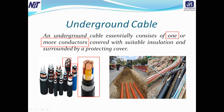An underground cable essentially consists of one or more conductors covered with suitable insulation. These conductors are covered with suitable insulation — the yellow color, the blue color, and the red color — because we define our phases as red, yellow, blue, and neutral as black. The cable is also surrounded by a protecting cover. These are the different parts you can observe in a practical cable found by the roadside.